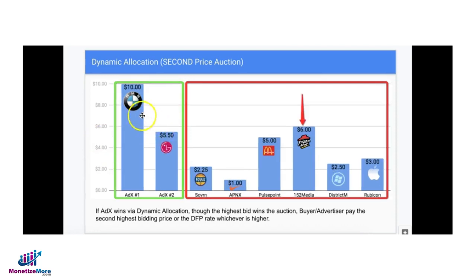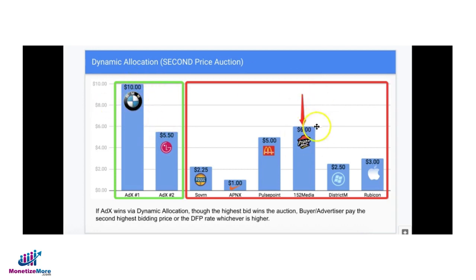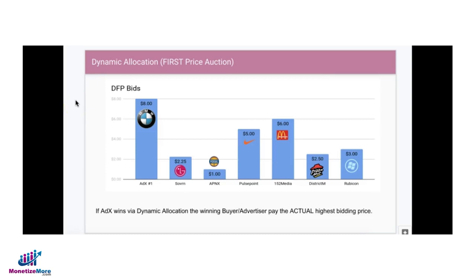Here's another example: BMW wins again at $10, but the second highest bid from Ad Exchange is only $5.50. There's another ad network in DFP targeting the same ad unit at $6, which is the highest competing line item. So BMW will still serve the ad, but since the DFP bid of $6 is higher than $5.50, BMW pays $6. Advertisers do this to avoid overpaying — sometimes called bid shading.